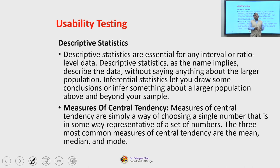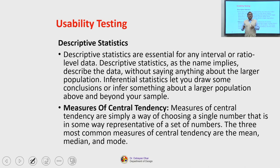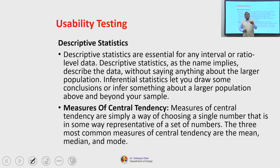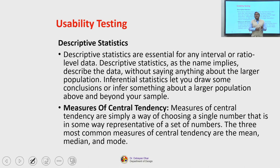Measures of central tendency are simply a way of choosing a single number that is in some way representative of a set of numbers. The three most common measures of central tendency are the mean, median, and mode. Remember that which measure of central tendency you would consider depends on the type of data — nominal, ordinal, interval, or ratio.